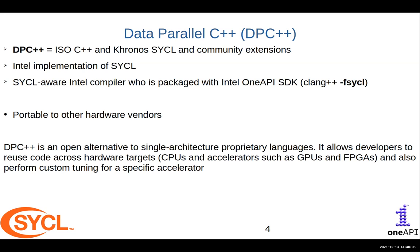DPC++ is mostly focused towards Intel for now, but there have been significant improvements in catching up with features for NVIDIA and AMD as well. DPC++ is an answer to an open alternative for single-architecture proprietary languages. It allows developers to reuse code rather than targeting CPUs or other accelerators separately. One can also do performance tuning on a very specific accelerator, even though it is written for a single code base targeting different hardware.